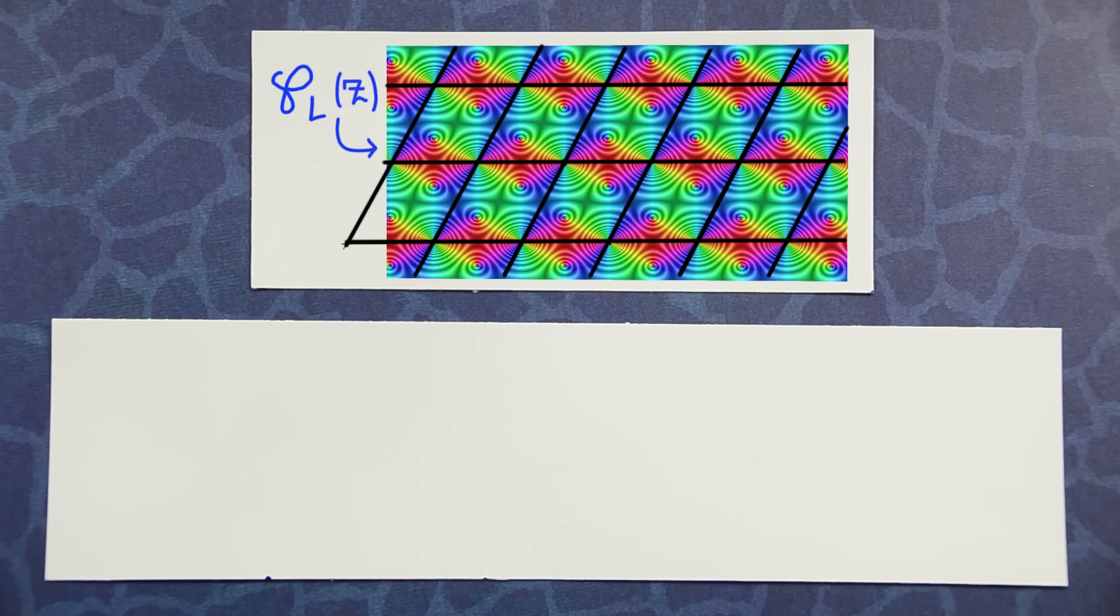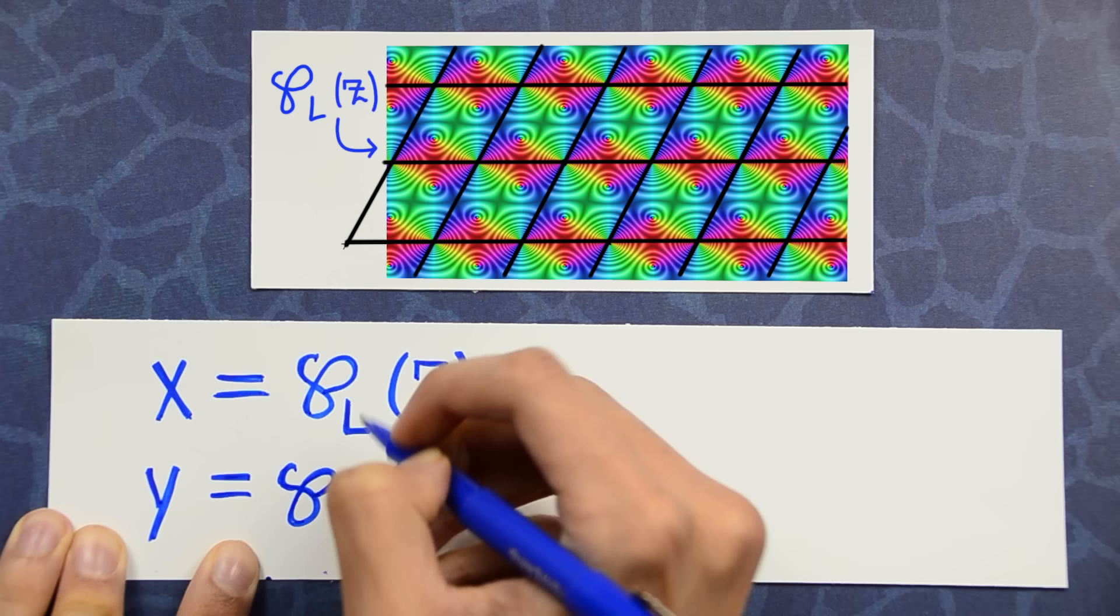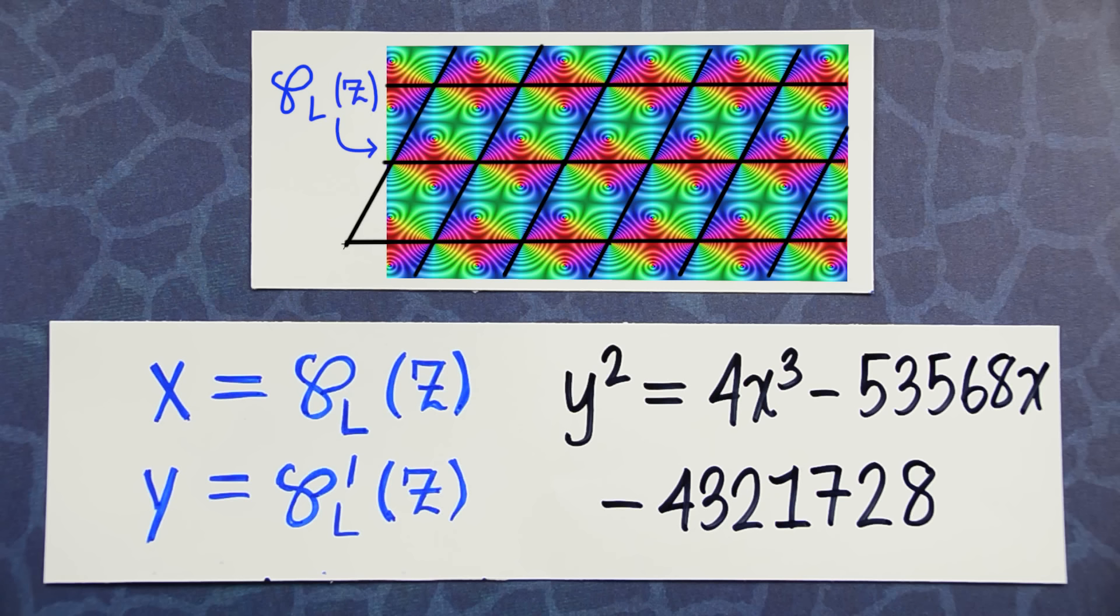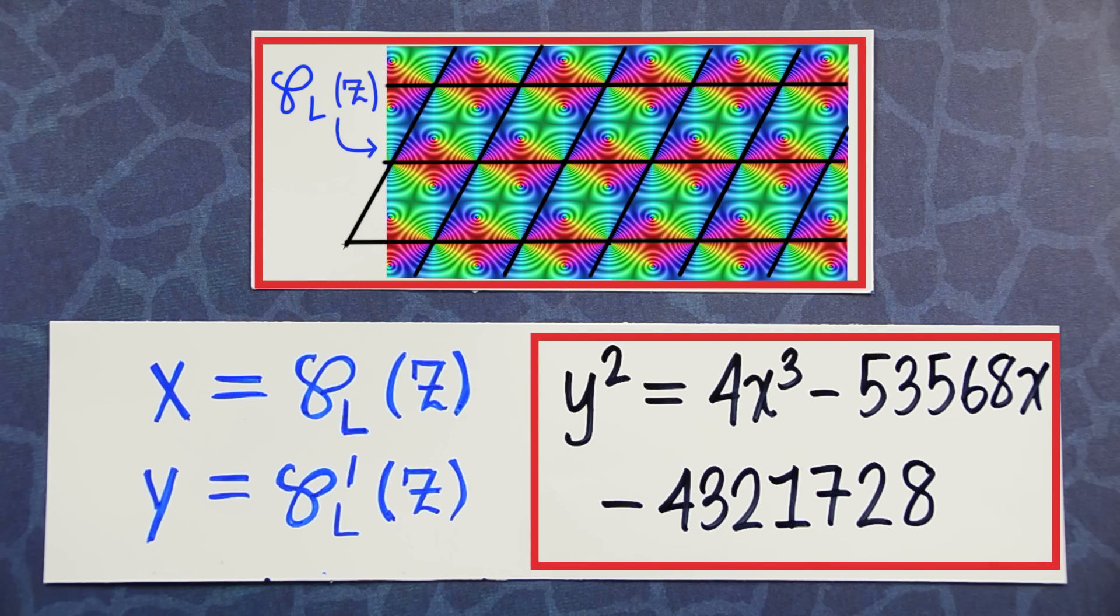The function you're looking at right now is called the Weierstrass p function. Set x equal to p of z, and y equal to p prime of z. Then x and y satisfy this rather complicated looking equation. So just like before, we started off with a lattice, and we cooked up something which lives in the world of number theory, an algebraic equation.